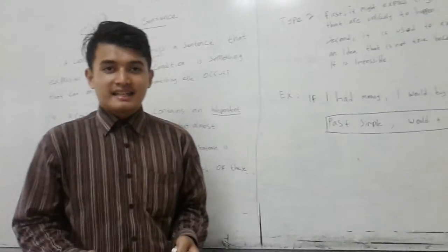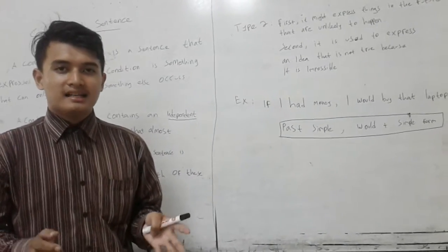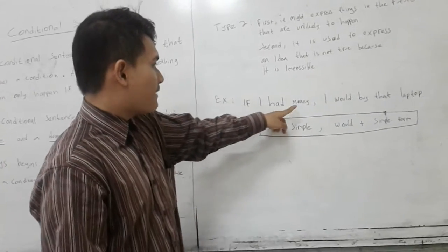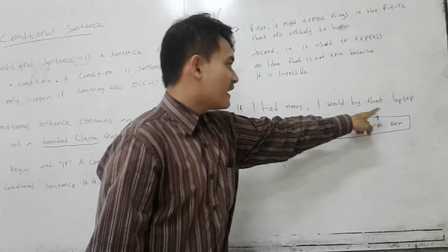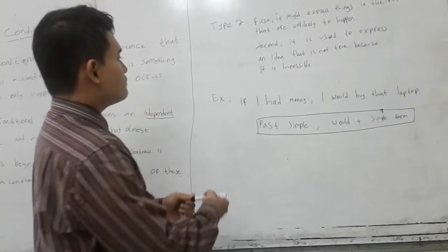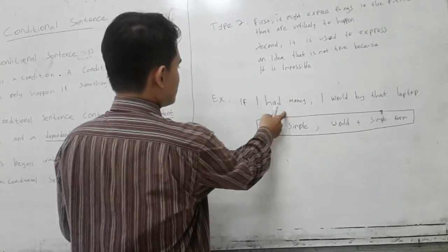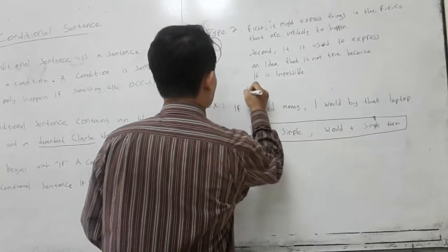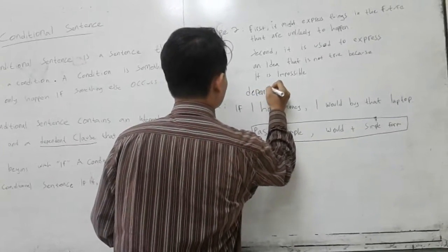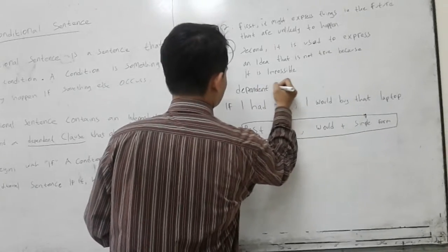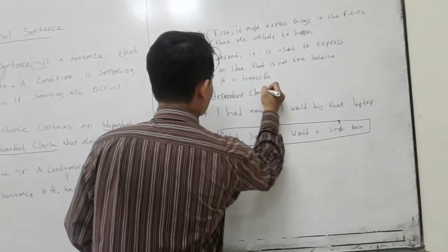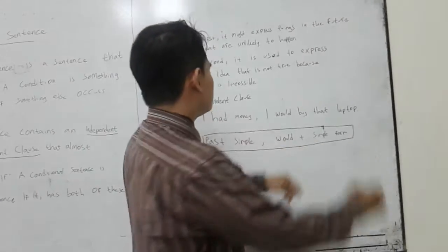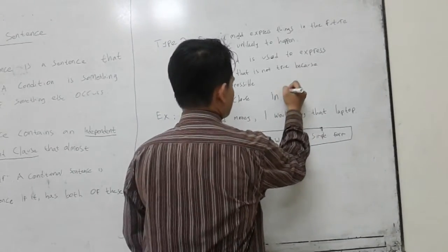If I had money, I would buy that laptop. Here we can say that this part is a dependent clause, and this is an independent clause.